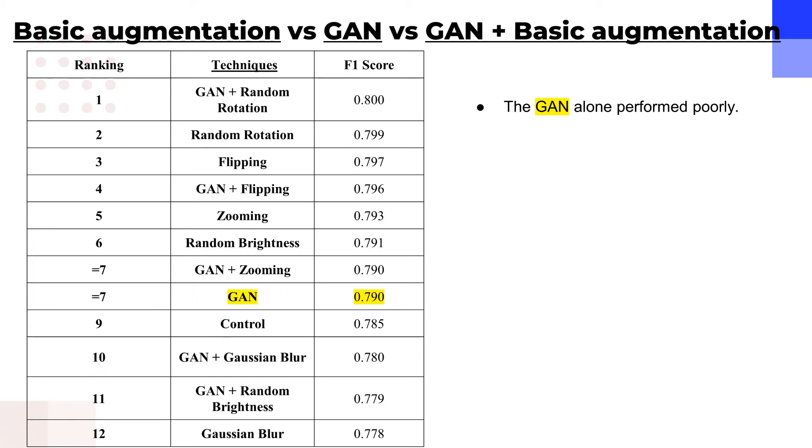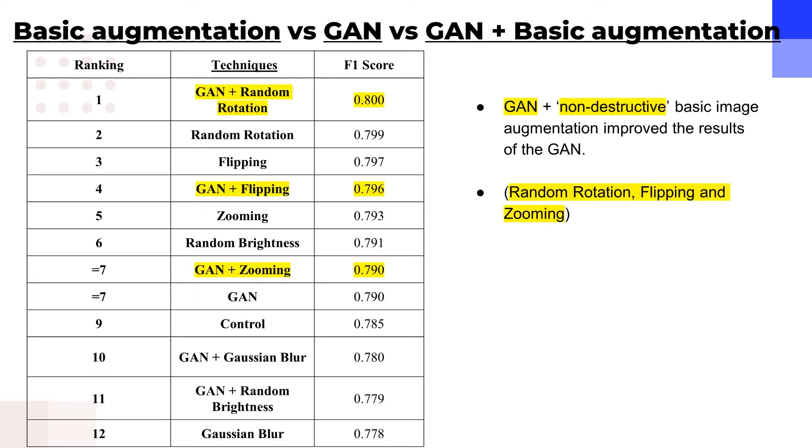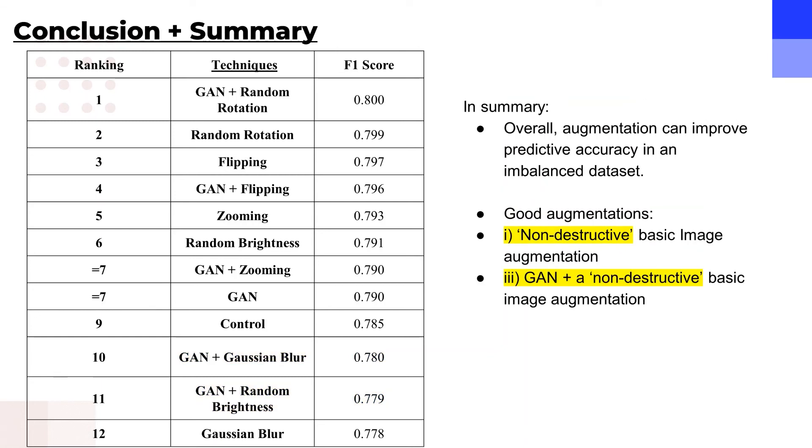The GAN alone did not perform well. But adding a non-destructive basic image augmentation improved the results of the GAN, while destructive basic image augmentation worsened the results of the GAN. Overall, augmentation can improve predictive accuracy in an imbalanced dataset. Non-destructive basic image augmentation or GAN plus non-destructive basic image augmentation performed the best.